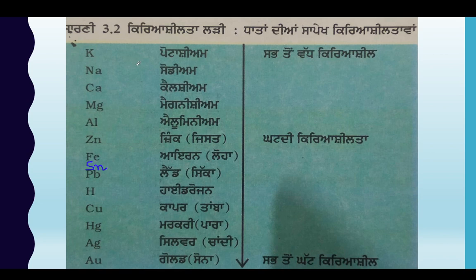First of all, I will write the code now. Let us take Potassium — Potassium is K. K is the first letter of the code we have written: Katrina. K is made of code — Katrina.